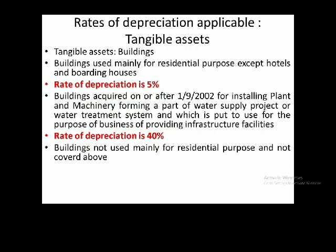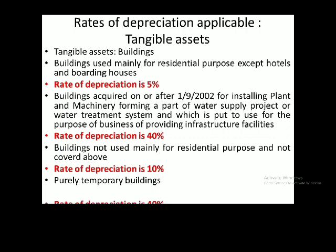Buildings not used mainly for residential purpose, and not covered above — if used for business purposes — the rate of depreciation applicable is 10%. However, if the building is purely temporary construction, the rate of depreciation is 40%. So there are four varieties of buildings, covering all types, with depreciation rates ranging from 5% to 40%.